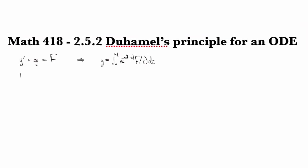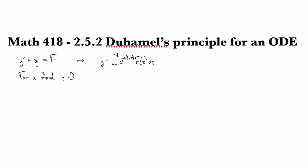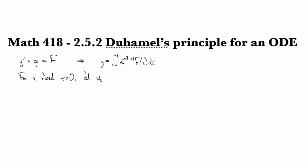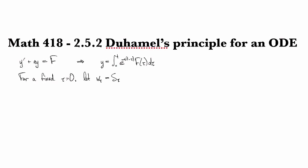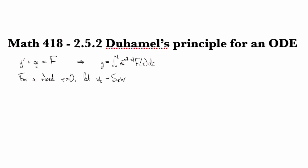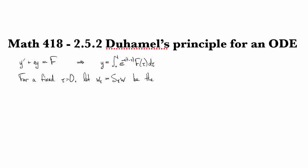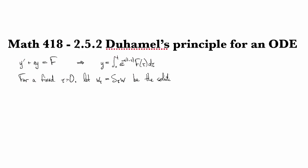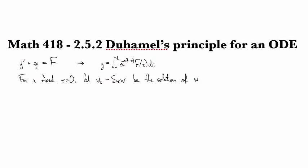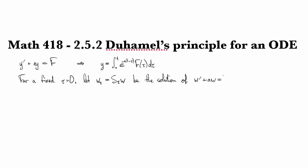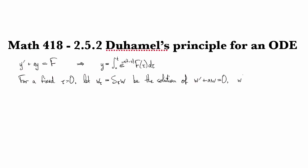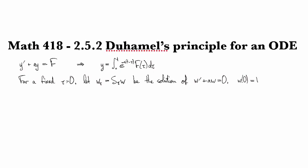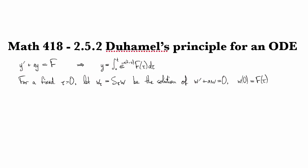So let's continue looking at this. So for a fixed time, fixed moment in time tau, let W sub tau, so this is going to be the shift forward in time of W, to be the solution of W prime plus AW equals zero. So we've, where we've got initial condition given by the value of f at tau.